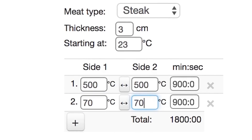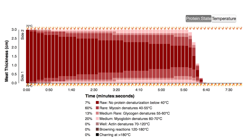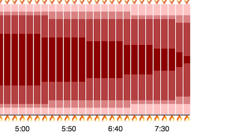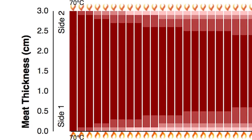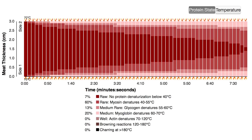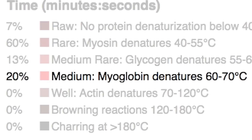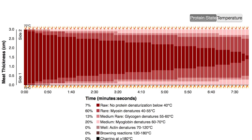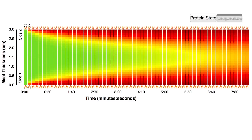If you cook each side of a 3 centimeter steak at 70 degrees Celsius for four minutes per side, after eight minutes, seven percent of the protein in the steak will not be affected at all — that's the middle at 1.5 centimeters. But around 0.25 centimeters deep, an oxygen-providing protein called myoglobin has been denatured. Click on temperature to see how hot it gets over time.